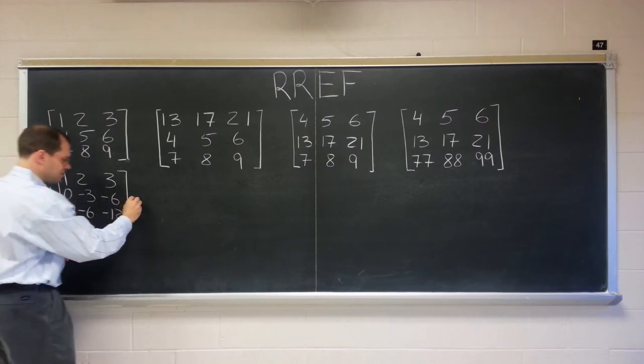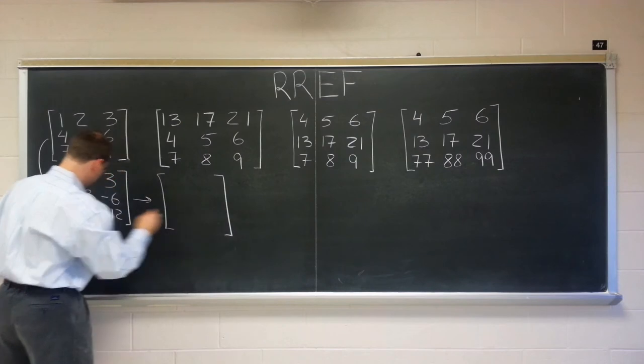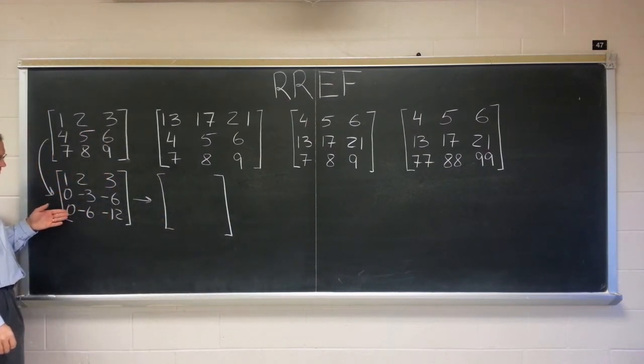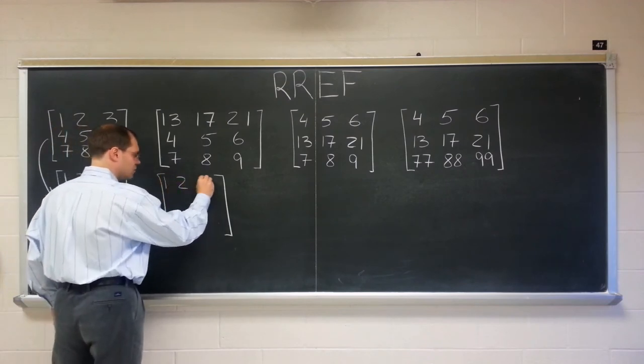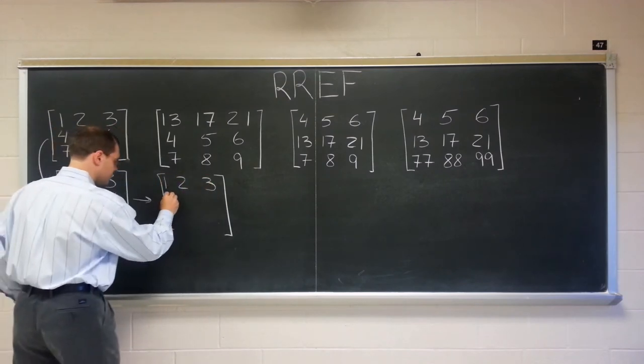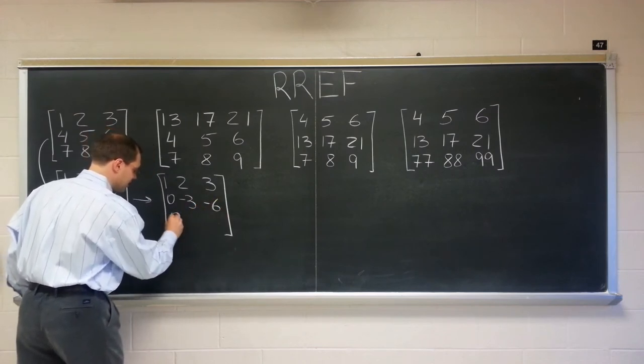Our second step would be perhaps to subtract twice of row two from row three, and of course that would give us all zeros in the last row, one, two, three, zero, minus three, minus six, and all zeros.